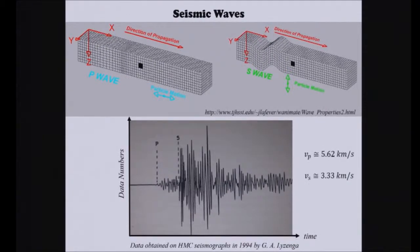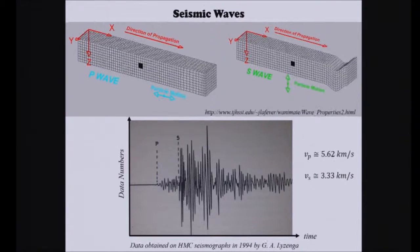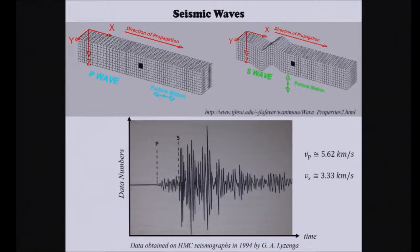So if you know how far from Claremont it is, you can draw a little radius around Claremont. And then if you have several other stations with similar data, you can triangulate, and that's how you can find the position of an epicenter.